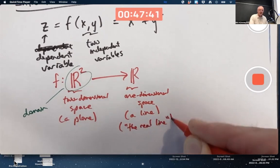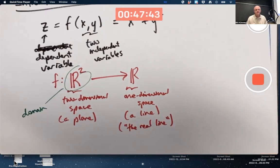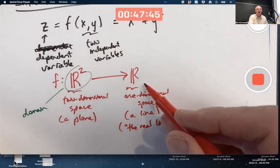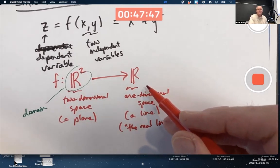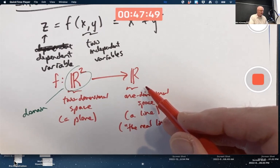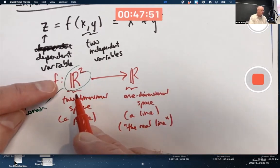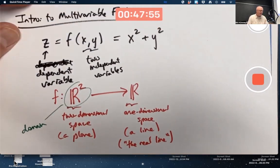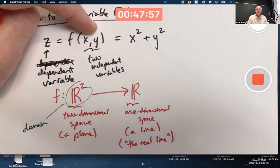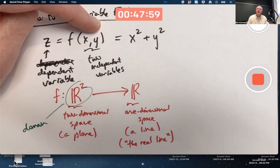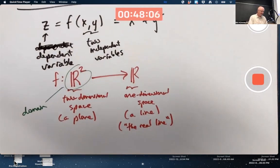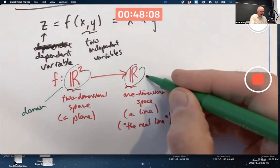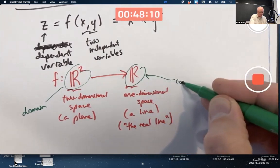The R actually represents the real numbers. This fancy-looking R represents the real numbers. So, does this R2 somehow represent two real numbers? Yeah, as points. We could think of X, Y as being a point in the plane with real number coordinates.